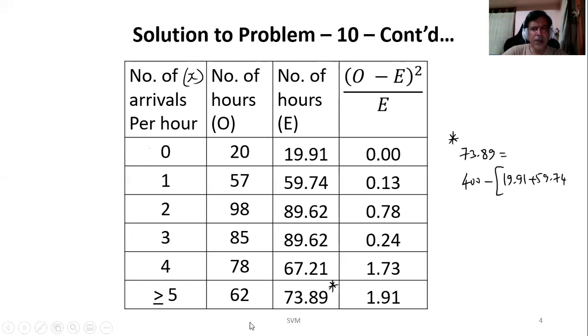Anyway we know sum of the observed frequency will always be equal to sum of the expected frequency. So we know that will be 400. On that basis, we'll be adding these values: 89.62, again 89.62, then 67.21. By doing this addition and then subtraction, this is actually a balancing figure. So this observed frequencies total also will be 400, this also will be 400.